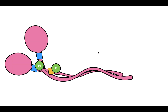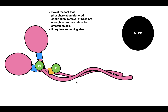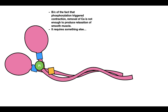How is contraction terminated? Because contraction is initiated by the phosphorylation of the thick filaments, the removal of calcium alone is not going to be enough to produce relaxation — it requires something else: myosin light chain phosphatase. Myosin light chain phosphatase will remove the phosphates from the thick filaments and therefore decrease their ATPase activity, which will promote relaxation. So in order to promote relaxation, you have to remove the phosphates on the myosin proteins.